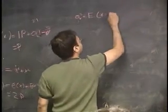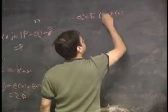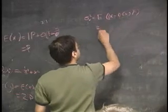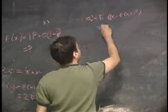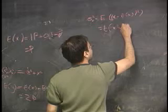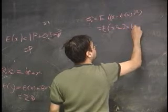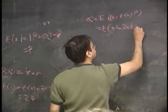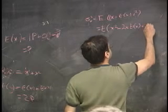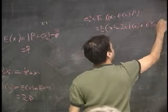The value of x squared — we can use this. This is the expected value of x squared minus 2 times x times the expected value of x, plus the expected value of x squared.